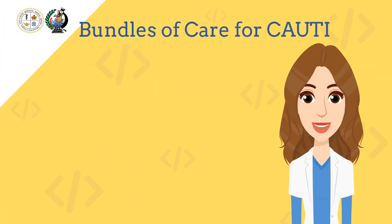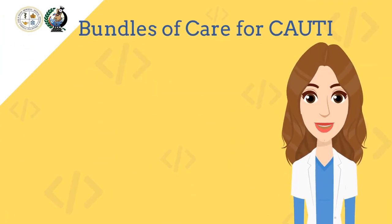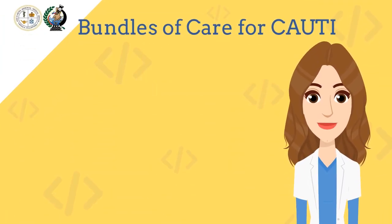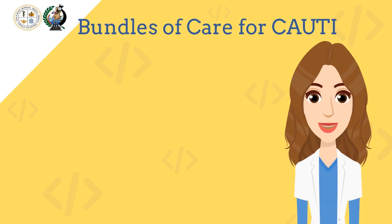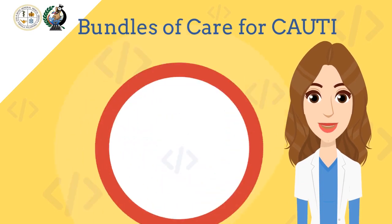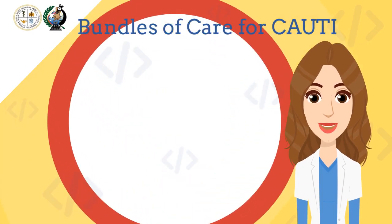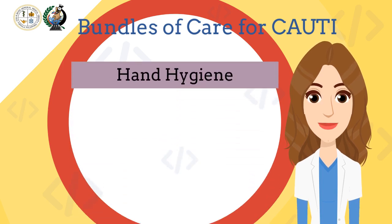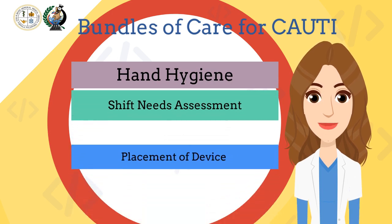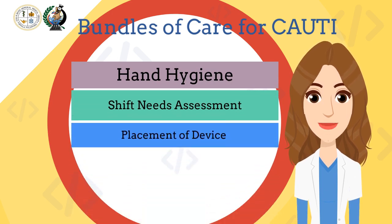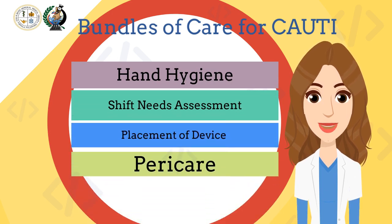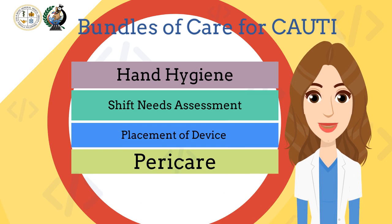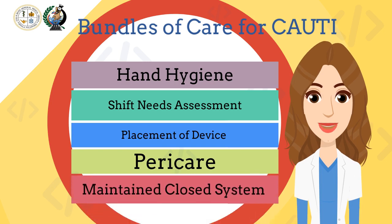To summarize our care bundle for catheter-associated urinary tract infection — the interventions we need to group to prevent infection are: proper hand hygiene, shift needs assessment, proper placement of device, pericare promotion, and lastly, maintaining its closed system.